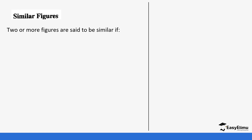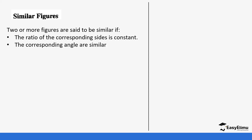Similar figures are figures — they can be two or more figures — that have the ratios of the corresponding sides to be constant. So if you divide the different sides that you have from the figures, they should give you the same ratio. Their corresponding angles are also equal.